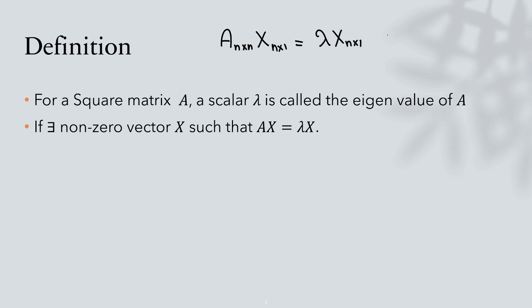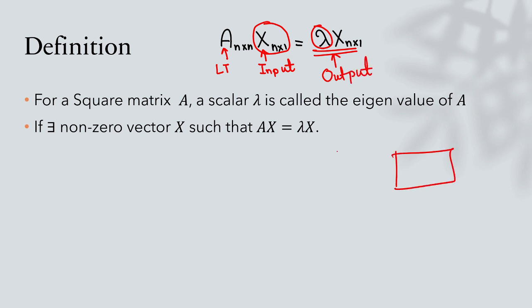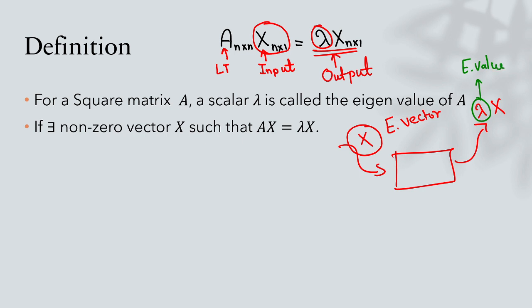What we learn here is the fundamental: A is a matrix, that is a linear transformation. This is my input to this linear transformation. What happens is when you put X as an input, the output is nothing but some multiple of the input. So it's like a machine — if you give X as an input and it comes out as some multiple of it, then X is the eigenvector, and that multiple is known as the eigenvalue. This machine A is a linear transformation, since a matrix is nothing but a representative of a linear transformation.